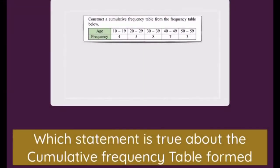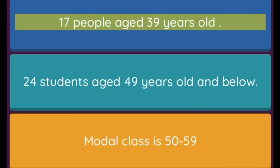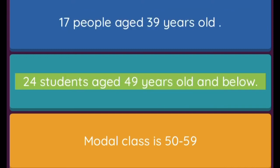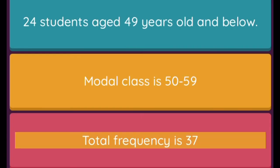Question: Which statement is true about the cumulative frequency table formed? Option 1: 17 people aged 39 years old. Option 2: 24 students aged 49 years old and below. Option 3: Modal class is 50-59. Option 4: Total frequency is 37.